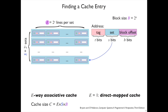Or, in this case, using the number E here for the number of lines we have per set, an E-way associative cache has E lines per set.